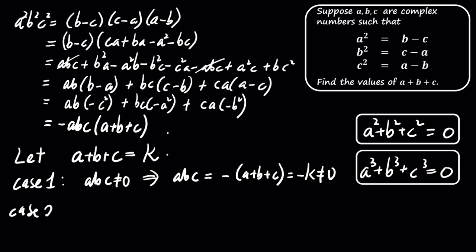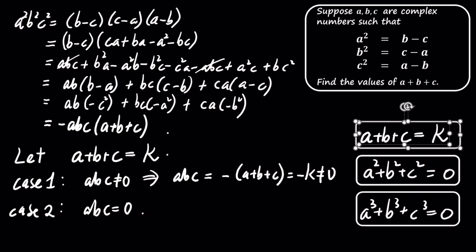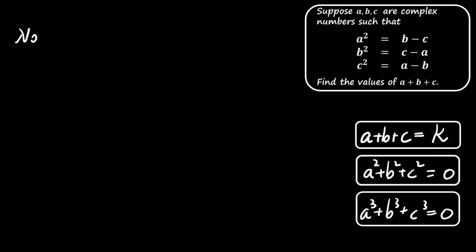In case 2, if A times B times C equals 0. Now, let's expand the square of the sum of A, B, and C.